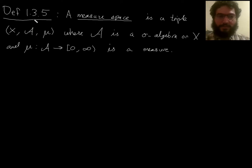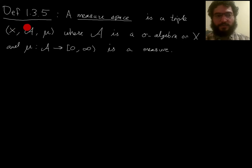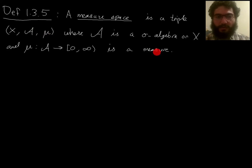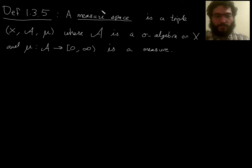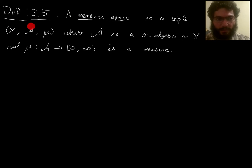Recall from last time the definition of a measure space — this is where we ended in the previous lecture. It's defined to be a triple: an underlying set, a sigma algebra, and a non-negative measure. A measure means it's a countably additive function on that sigma algebra, and non-negative means it takes non-negative values. The set and sigma algebra together make what we call a measurable space, and adding the non-negative measure gives a measure space.